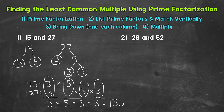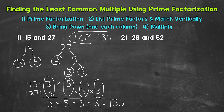That's our least common multiple. The LCM, the least common multiple of 15 and 27, is 135.